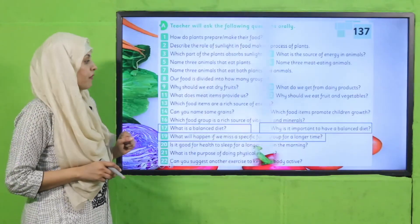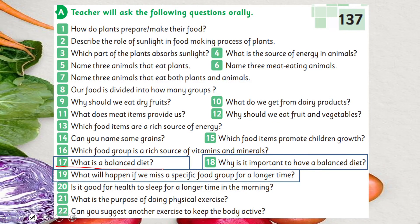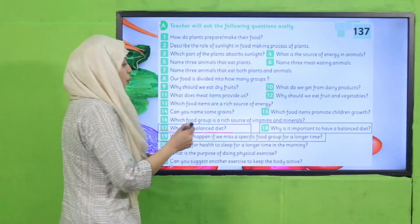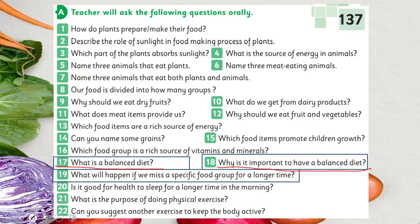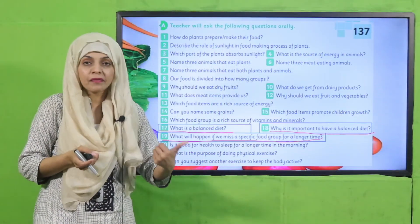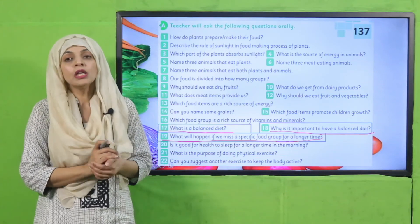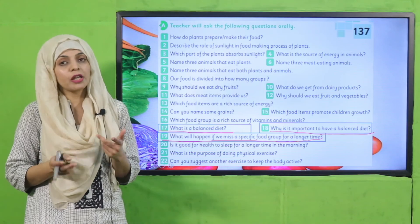Now it's time for evaluation. I will ask some questions — answer them orally. What is a balanced diet? A diet which contains everything from the food groups — carbohydrates, proteins, vitamins, minerals and dairy products — to keep our cells healthy. Why is it important to have a balanced diet? We must have a balanced diet to keep ourselves healthy and fit. What will happen if we miss a specific food group for a long time? We will become weak and ill — it could be mineral deficiency, nutrient deficiency, or protein deficiency.